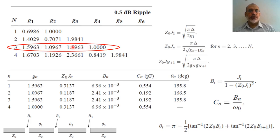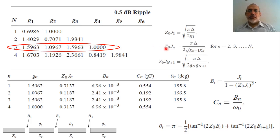From G1, G2, G3 we can obtain the required values for the inverters. Z_0 · G_1 equals square root of delta over 2·G1. G1 here would be 1.5 and delta is 0.1, so we can obtain the value of the first inverter, where Z_0 is 50 Ohm. The second and third inverter values are obtained from G2 and G3, such that Z_0 · G_2 equals square root of delta over 2·G1·G2.